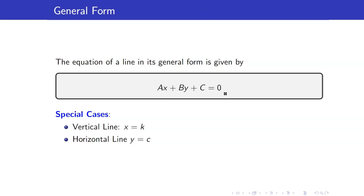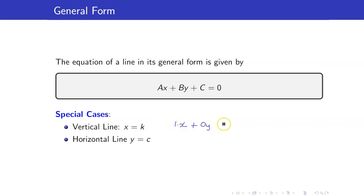Here are the special cases of the general form of a line. If you have a vertical line, the equation is x equals a constant. And for a horizontal line, the equation is y equals a constant. Why are these special cases? For a vertical line, you have 1 times x plus 0y minus k equals 0, so a is 1, b is 0, and c is negative k.